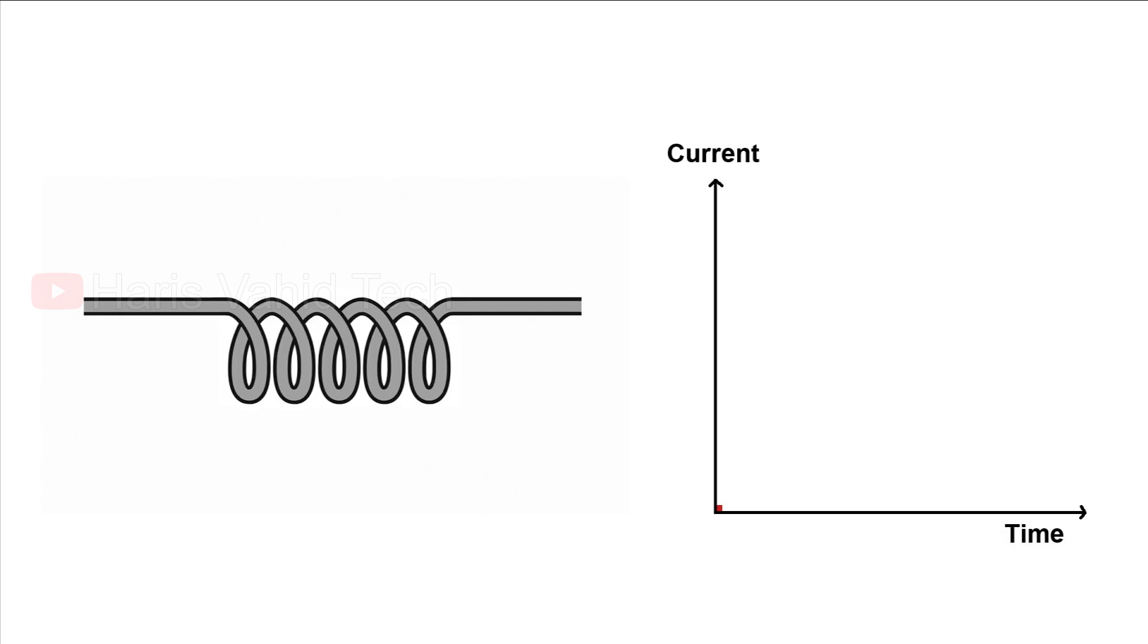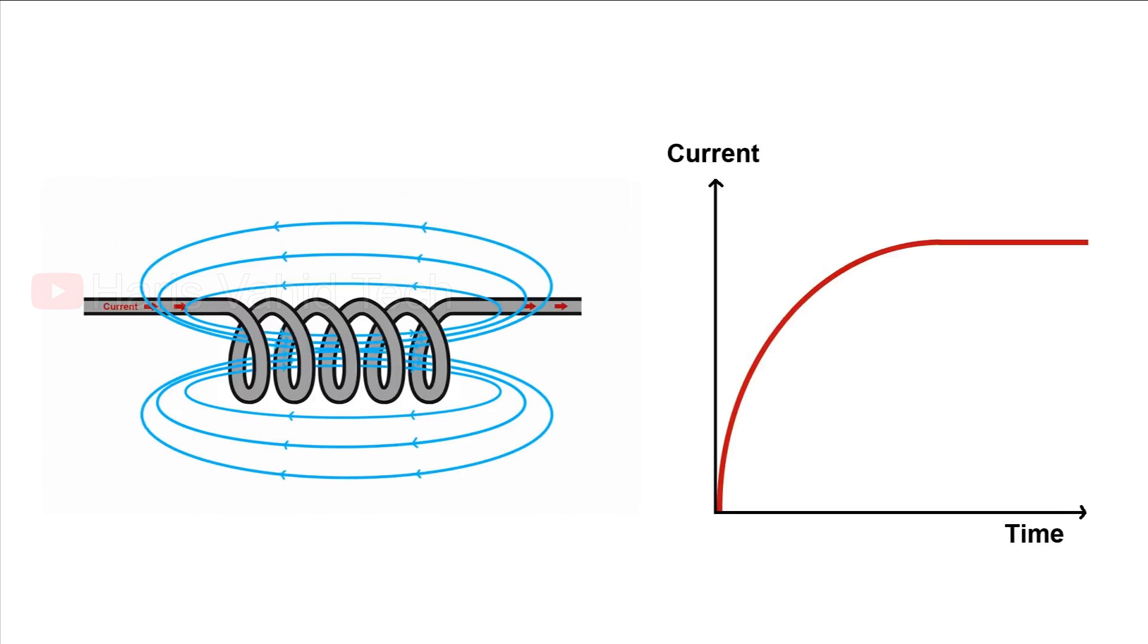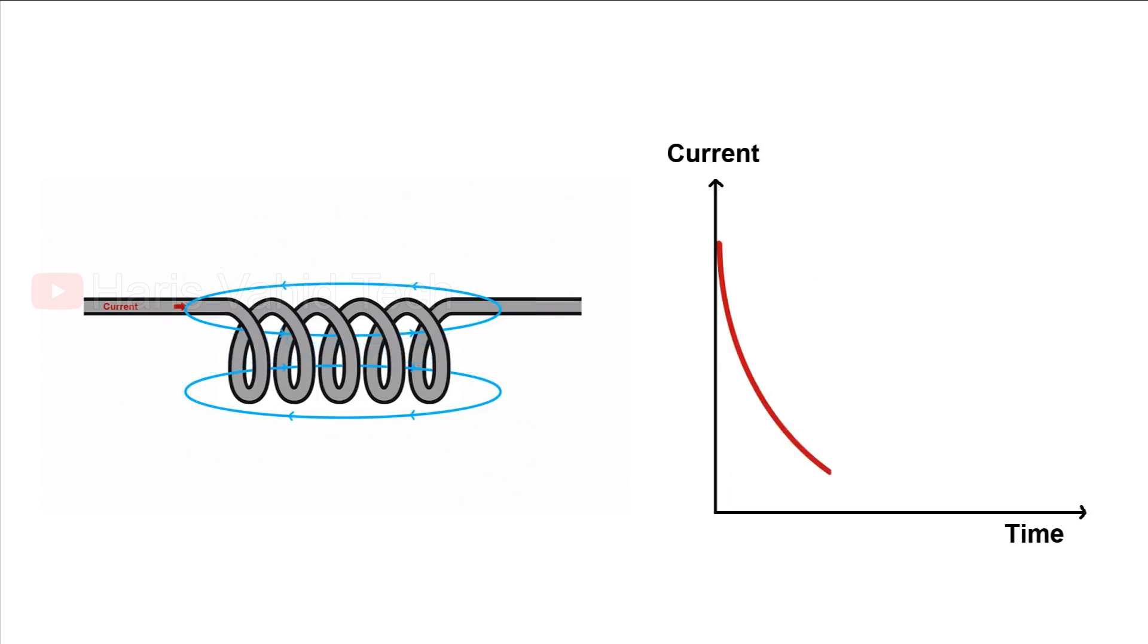When current first starts to flow through the coil, the magnetic field starts to expand and then stabilizes. And then you got some energy stored in the magnetic field. When current stops flowing, the magnetic field starts to collapse. And the magnetic energy gets turned back into electrical energy. So it's like a temporary storage area for energy.